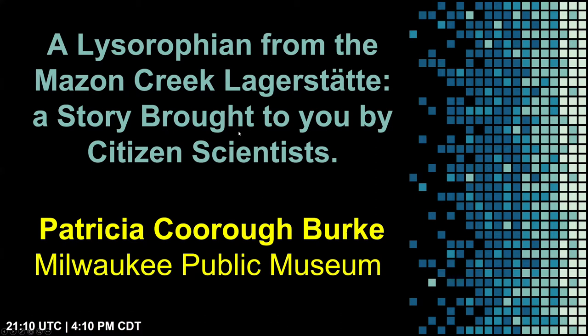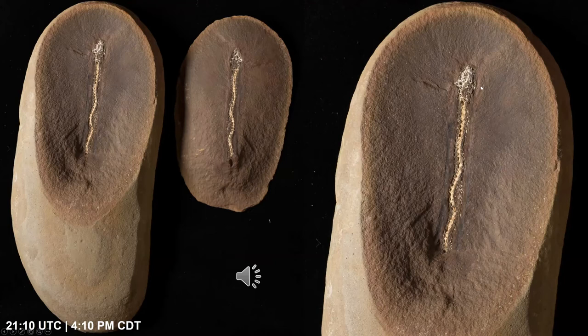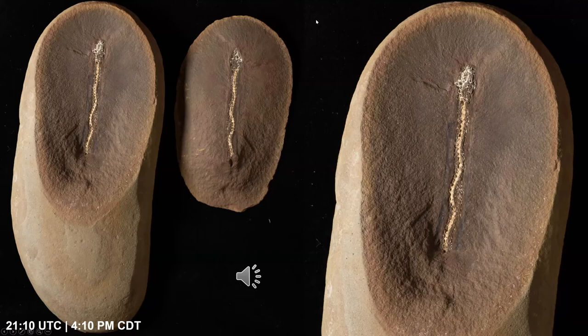Our next talk is by Patricia Kirk Burke from the Milwaukee Public Museum: 'Elisarophian from the Mazon Creek Lagerstätte — A Story Brought to You by Citizen Scientists.' I'm here to introduce you to VP 359229.1 and .2, a part and counterpart of a Mazon Creek nodule which arrived at the Milwaukee Public Museum along with thousands of other rocks, minerals, and fossils in a donation from an ambitious and energetic amateur collector named Robert Callis.